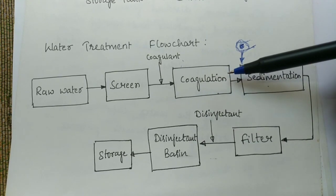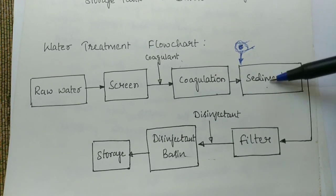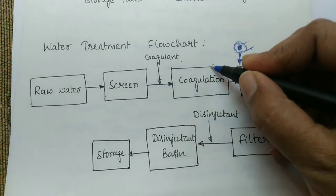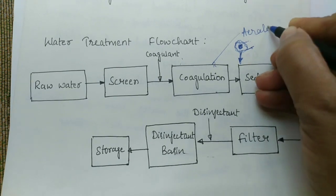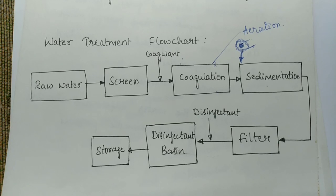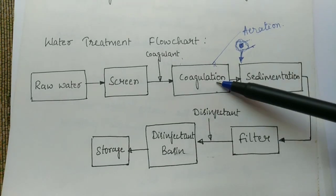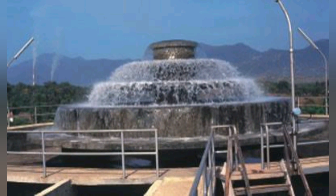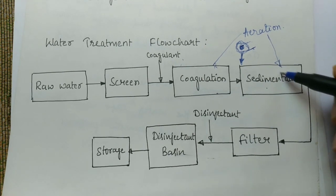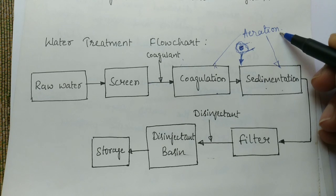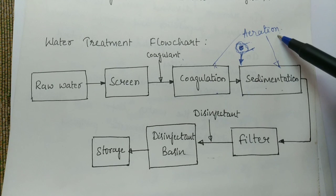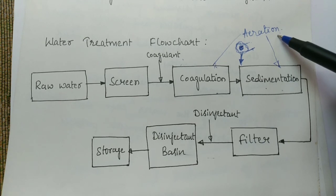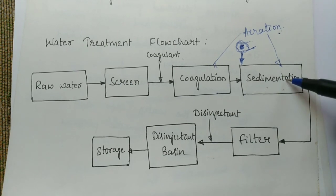The coagulant forms the floc, and then this water is taken to the sedimentation unit. Before sedimentation, we can also provide an optional treatment called aeration. Aeration is a treatment wherein we aerate the water by increasing the dissolved oxygen content. Water can be taken directly from coagulation to sedimentation, or first taken to aeration and then to sedimentation. Aeration increases the oxygen content making the water fresh, helps in removing various dissolved gases, helps in removing iron and manganese salts, and purifies the water to some extent — even some color gets removed in the aeration process.